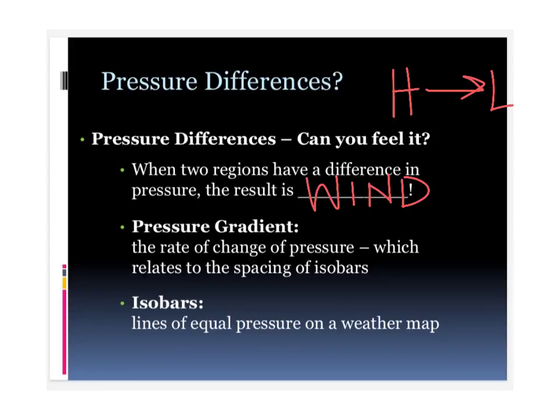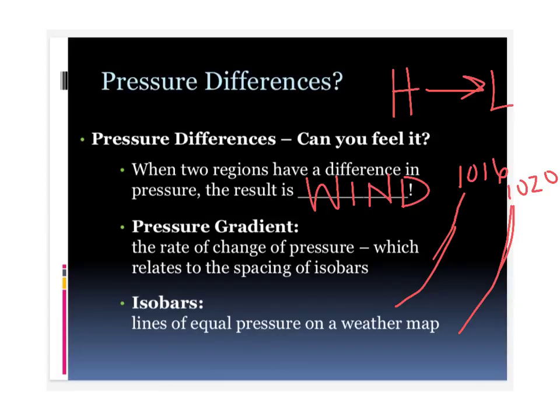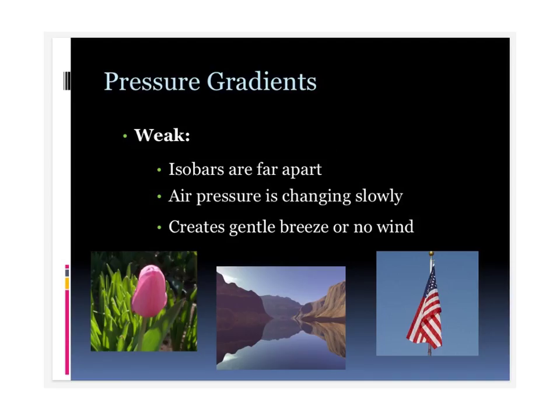When we're talking about differences in pressure, we have a pressure gradient. That's talking about the spaces between isobars. An isobar is a line of equal pressure on a weather map. So this would be one pressure — say 1016 — and here is another pressure at 1020. Anything on this line is at 1020, and anything here is at 1016. The pressure gradient describes how close or far apart these pressure lines are. If they're closer together, pressure is changing very quickly. If they're farther apart, pressure is changing very slowly.